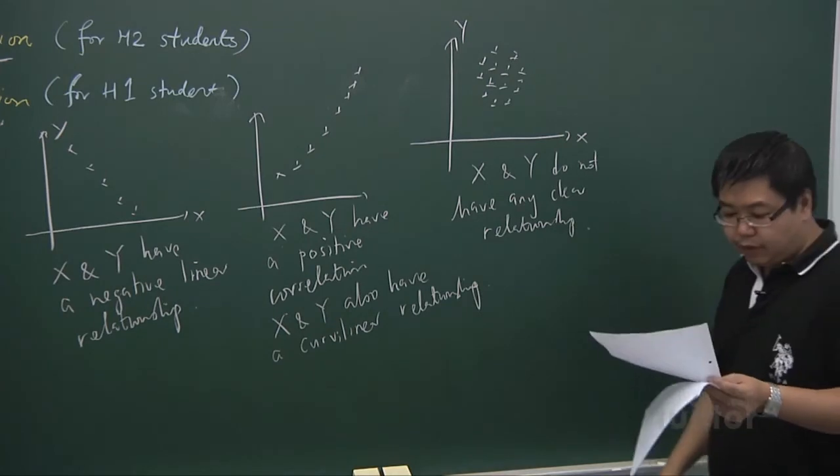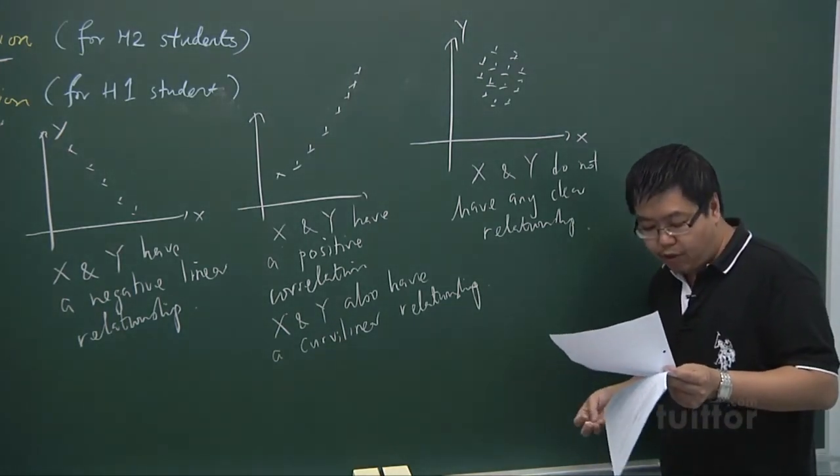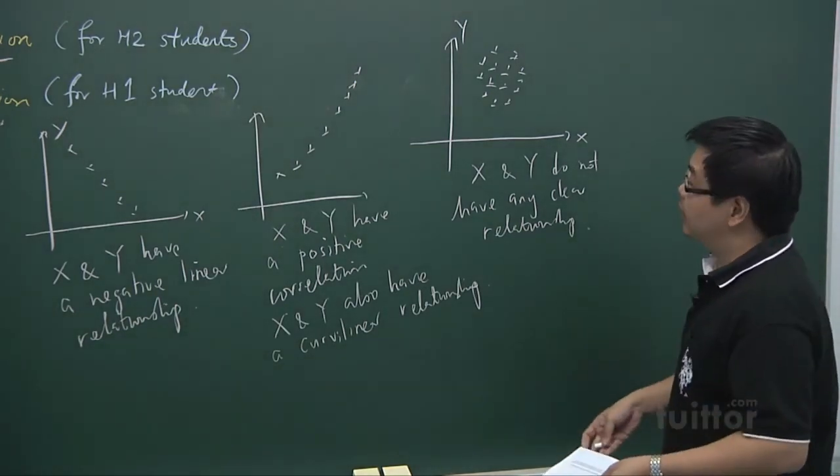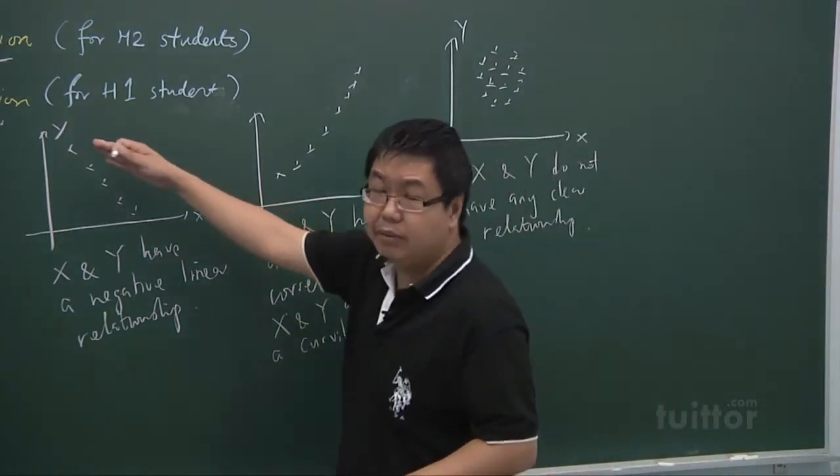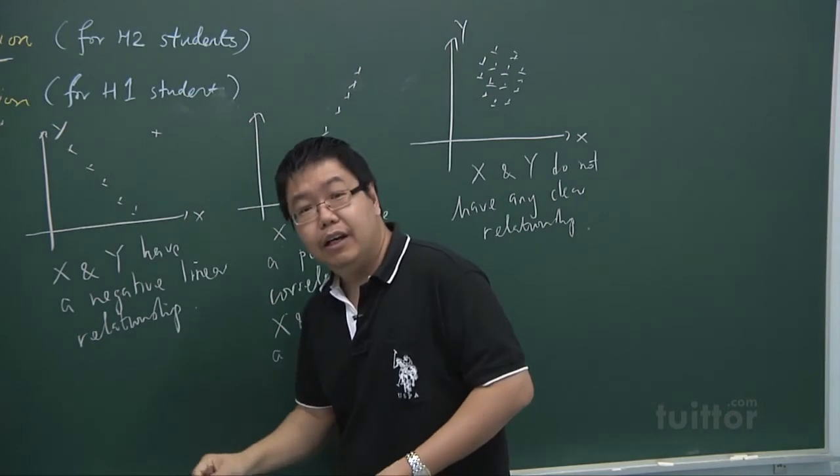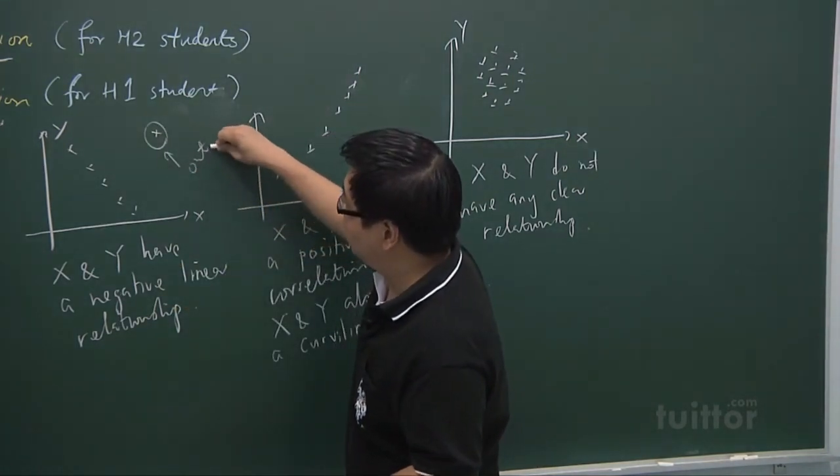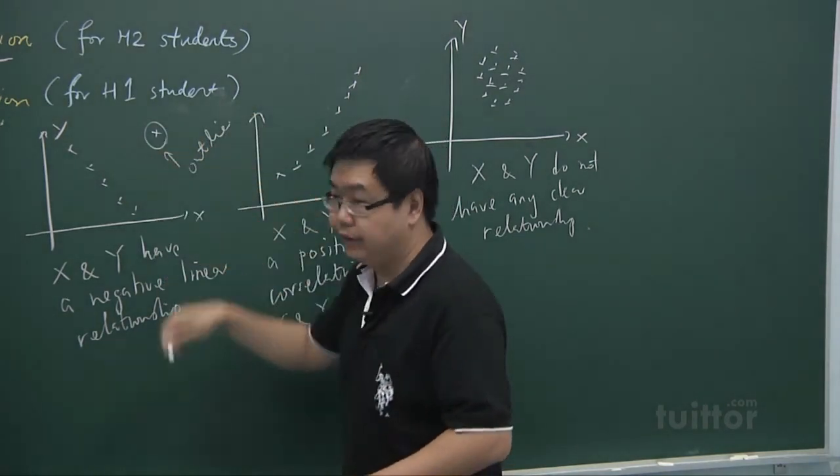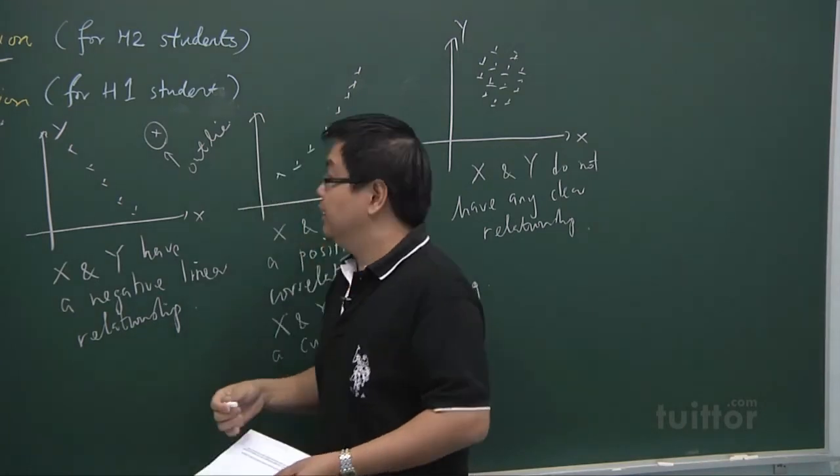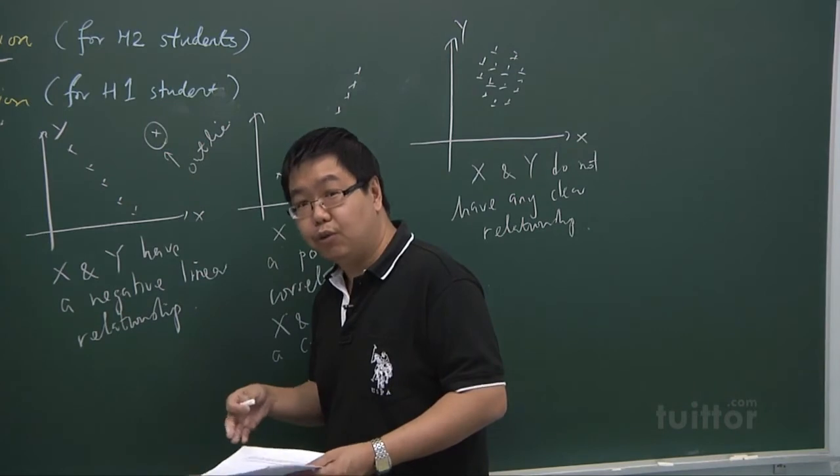So in general, scatter diagram gives us a visual evidence of outliers or suspicious observations. So sometimes you may see that the points are all in a certain straight line, then suddenly there is a point out here. And we call this an outlier that is far away from the remaining points. Such outliers give us an indication that this particular point could have been accidentally recorded wrongly.